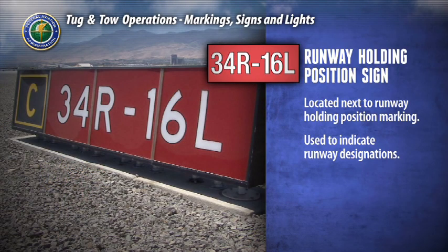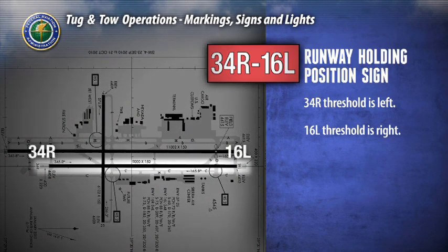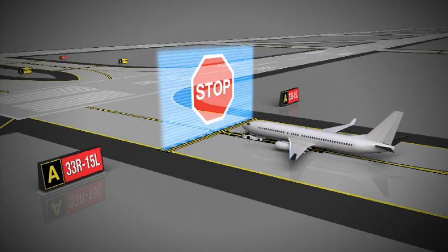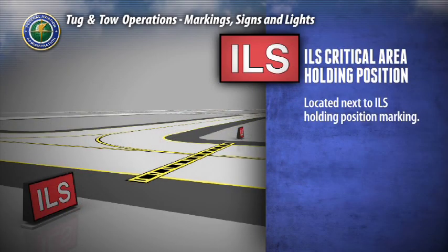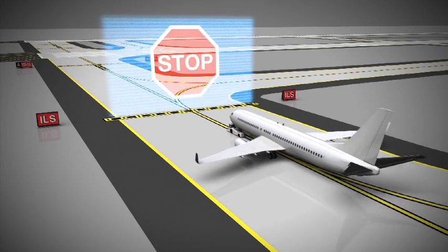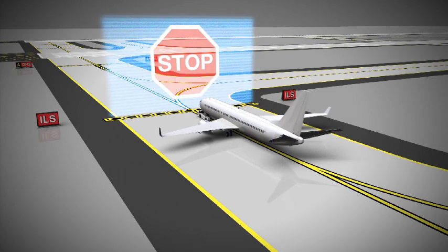The runway numbers are separated by a dash and their arrangement indicates the direction of the corresponding runway threshold. For example, the threshold for runway 34R is to the left and the threshold for runway 16L is to the right. If you approach this sign, stop and do not move beyond it until air traffic control clearance is granted. The ILS critical area holding position sign, along with the ILS holding position marker, indicates that aircraft and vehicles will hold at this sign until clearance is given by air traffic control when the ILS is in use. Taxiing beyond this point may interfere with the ILS signal to approaching aircraft.